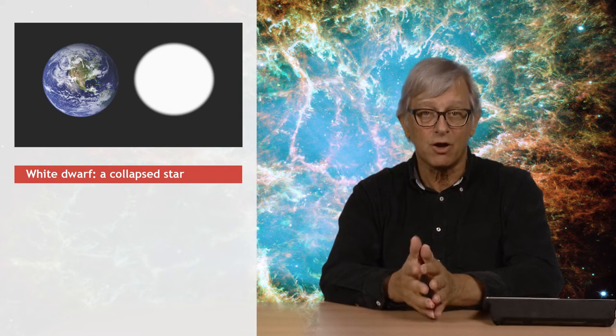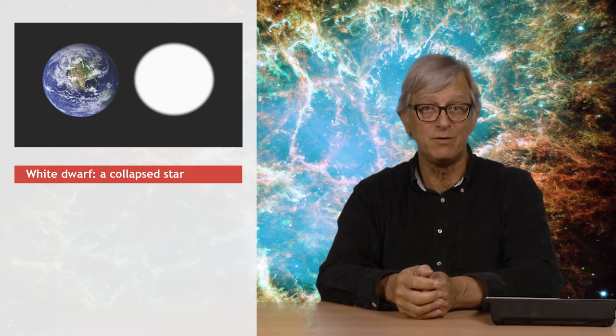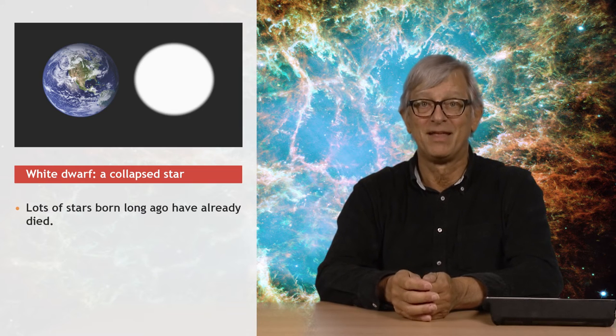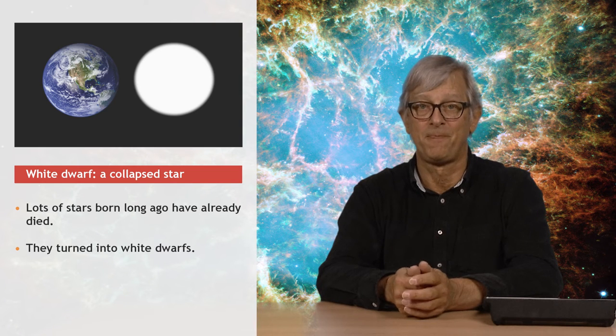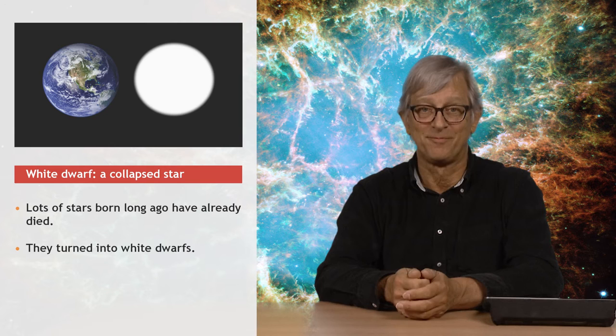So, a star like the sun lives 10 billion years. The universe is 13.7 billion years old, so lots of stars born long ago have already died. And they've turned into white dwarfs. We have something like 10 billion white dwarfs in the galaxy. The nearest one is in orbit around Sirius.